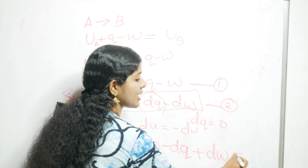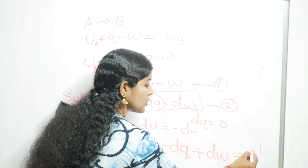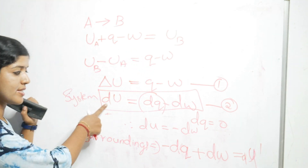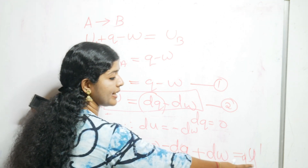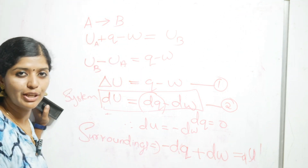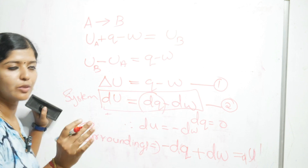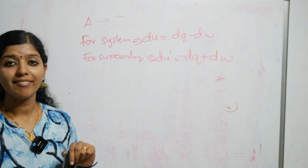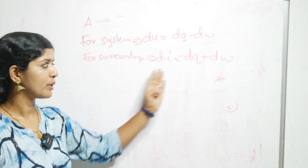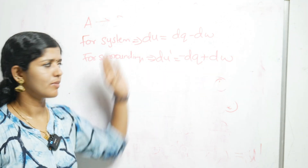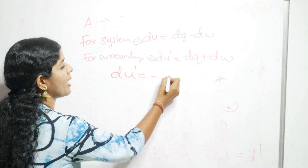So this is the new internal energy of the surroundings, which I am representing as dU'. The internal energy of the system is dU equals dQ minus dW. The internal energy of the surroundings is dU' equals minus dQ plus dW. Now if I put a negative sign on the system equation, I get minus dU equals minus dQ plus dW. So dU' equals minus dU.